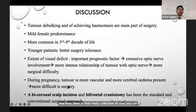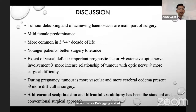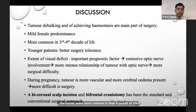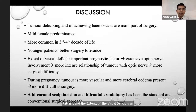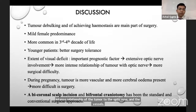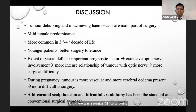Tumor debulking and achieving hemostasis are the main parts of the surgery. There was female predominance and tumors were more common in the third and fourth decade of life. Younger patients tolerated surgery better. The extent of visual deficit is an important prognostic factor — extensive optic nerve involvement indicates a more intense relationship of the tumor with the optic nerve and vessels, increasing surgical difficulty. During pregnancy, the tumor is more vascular with more cerebral edema, making surgery more difficult.